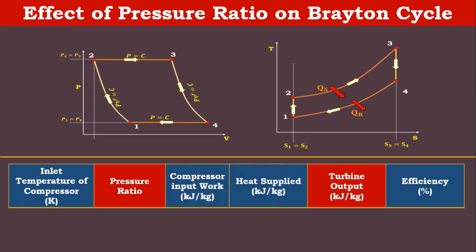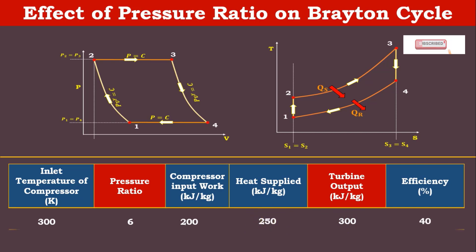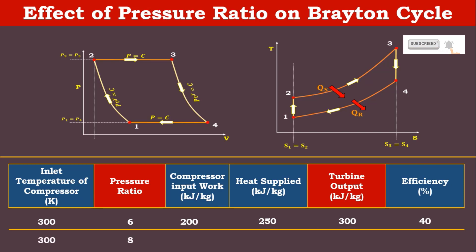Let's take another example. In this table we are going to keep turbine output as constant and vary the pressure ratio. For pressure ratio of 6 with 300 KJ turbine output, the compressor requires work of 200 KJ per kg of air and heat supplied is 250 KJ per kg, giving efficiency of 40%. When we increase pressure ratio from 6 to 8, the compressor requires 245 KJ per kg of work, but to produce 300 KJ output we have to supply only 116 KJ per kg of heat — compared to 250 previously.